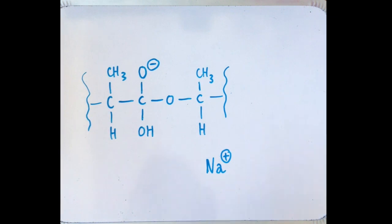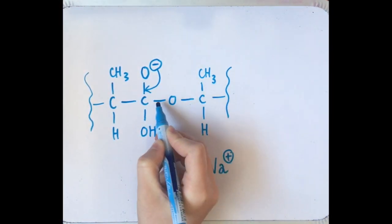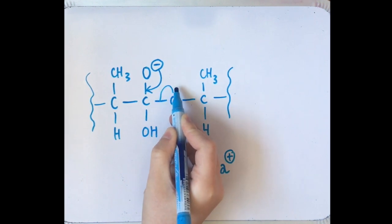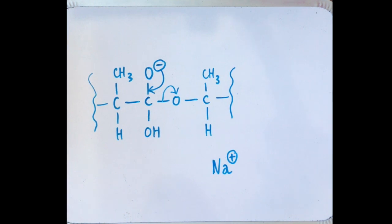However, the negative oxygen is attracted to the delta positive carbon atom and therefore will donate its electrons back to the carbon. This causes the carbon-oxygen bond in the polymer backbone to break.